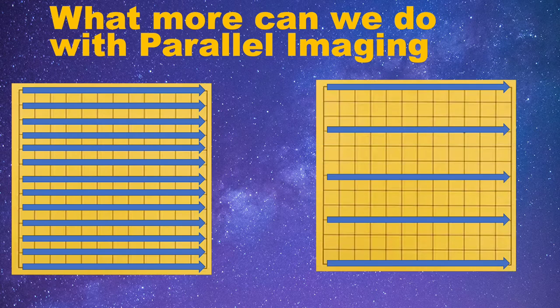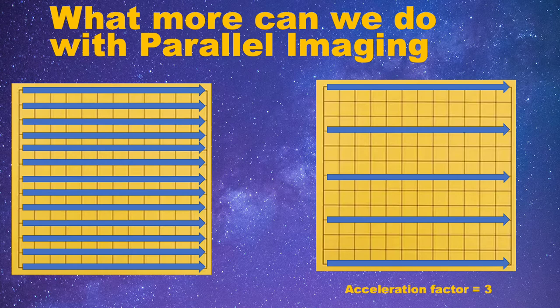However, if you skip some parts of the k-space, you will get a partial k-space, but you can reduce the total scan time. For example, if you scan every three lines of the k-space, the total scan time will be reduced to one third. Here, we define a number called acceleration factor to describe how much we skipped in the k-space.